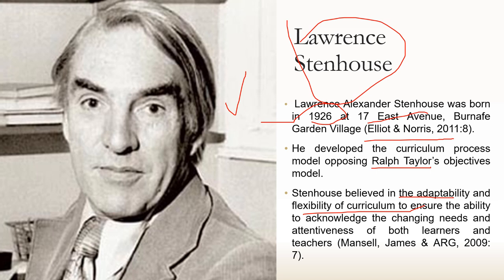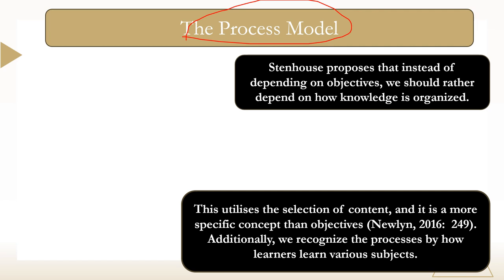Stenhouse believed in the adaptability and flexibility of the curriculum to acknowledge the changing needs of both learners and teachers. He held that the curriculum should be versatile, allowing teachers and learners to maneuver around the learning content. The process model is not really about what needs to be attained but how we attain the knowledge.